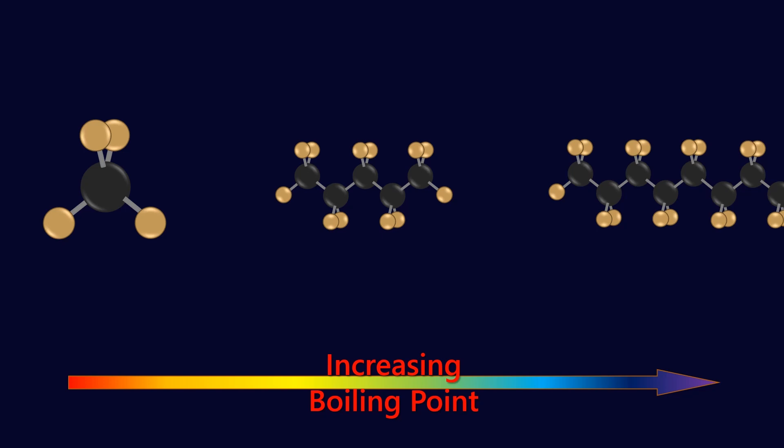In the middle you've got pentane, which is typically a liquid at room temperature. And on the right you've got something with maybe 60 or 100 carbons in it and that would be effectively a solid at room temperature. So we are increasing the boiling point as we increase molecular weight.